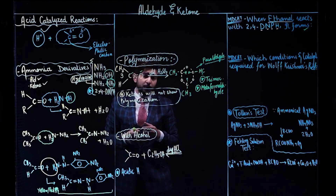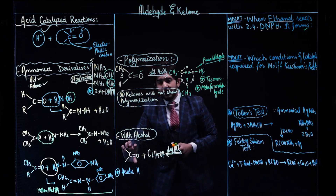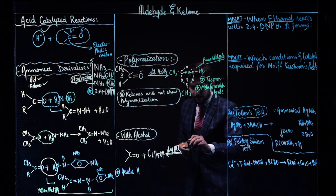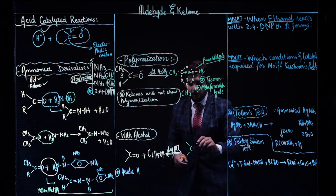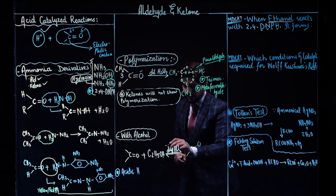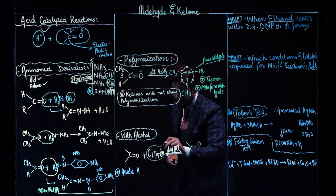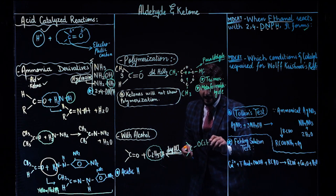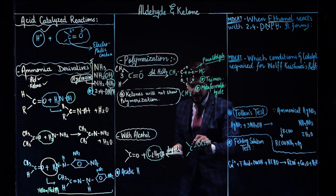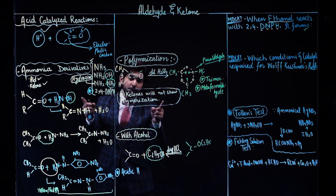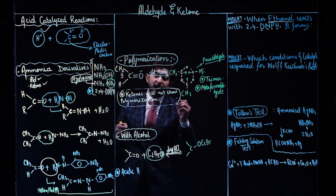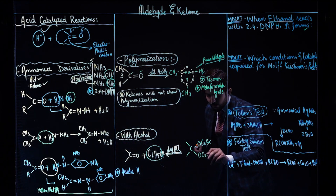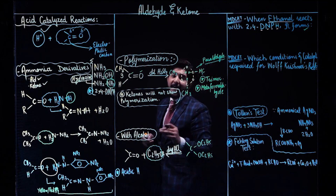Now let's move towards alcohols — that will give you acetals. You have methanol, and when you attach it, it forms the acetal. In the acetal, what do we have? That is an ether group: O-C₂H₅. Here the ether linkage is created because this oxygen has carbon atoms on both sides. So the ether linkage is created in the acetal. On the other side it will give you the same thing: C₂H₅. So that molecule is named an acetal.